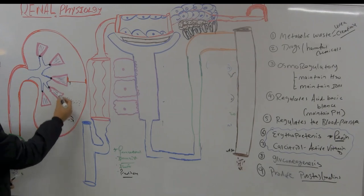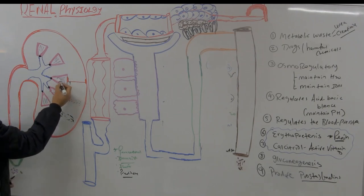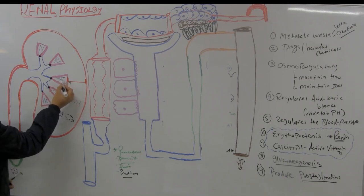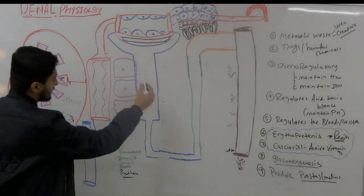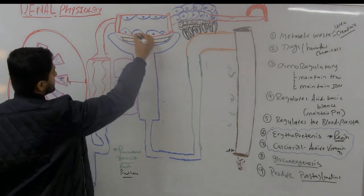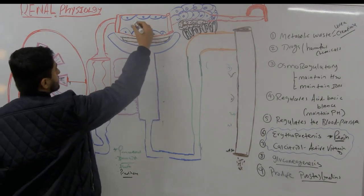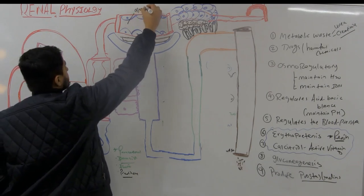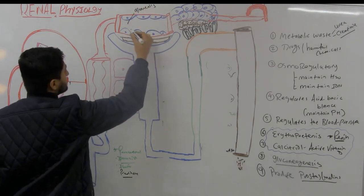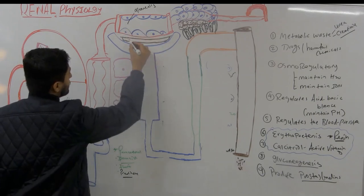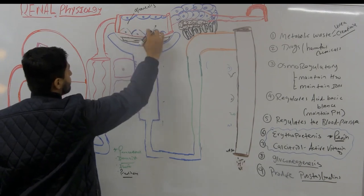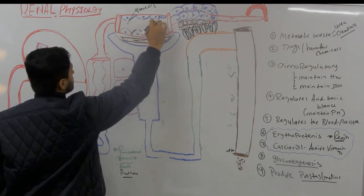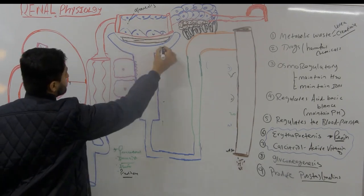The pyramids contain medullary rays, which are striated and contain the loop of Henle. If I draw one nephron, you have the glomerulus right here with capillaries, a basement membrane, and endothelial capillary cells with fenestrations — because we're talking about the kidney — and the Bowman's capsule.